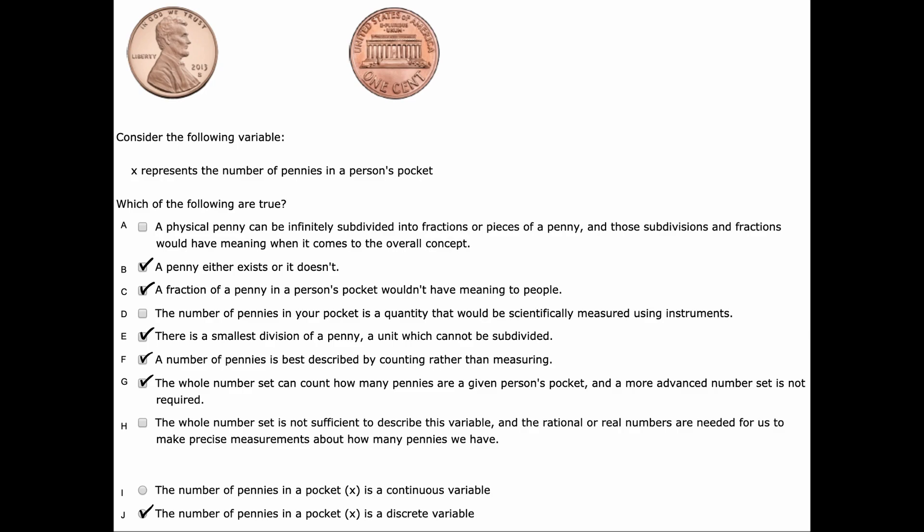Okay, the choices that I checked were... I chose B. A penny either exists or it doesn't. I also chose C. A fraction of a penny in a person's pocket wouldn't have meaning to people. I chose E. There is a smallest division of a penny, which is just the single penny, and that unit cannot be subdivided. I chose choice F. A number of pennies is best described by counting rather than measuring. And I chose G. The whole number set can count how many pennies are in a given person's pocket, and a more advanced number set is not required. Finally, my conclusion was J. The number of pennies in a person's pocket is actually a discrete variable.